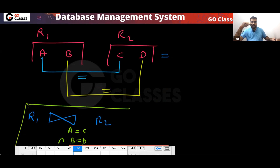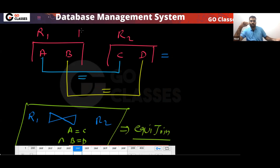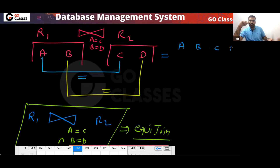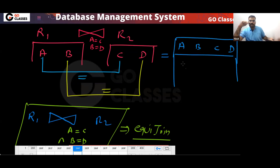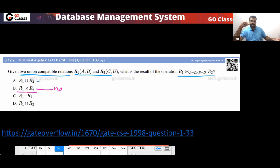If you do this join, what will be the schema? The final schema will be A, B, C, D. Now looking at the answer options — some give schema A, B and one gives schema A, B, C, D.